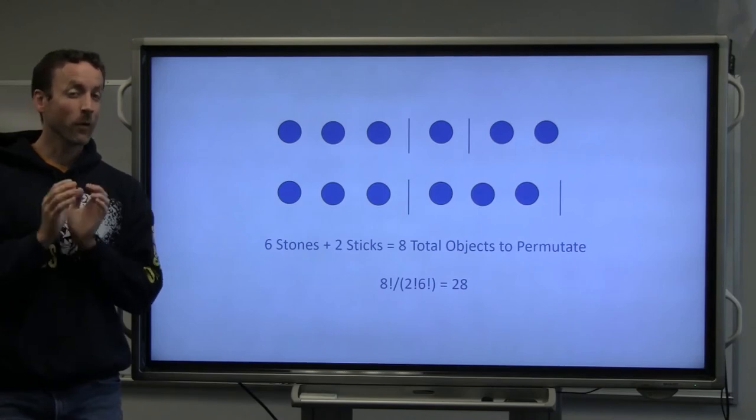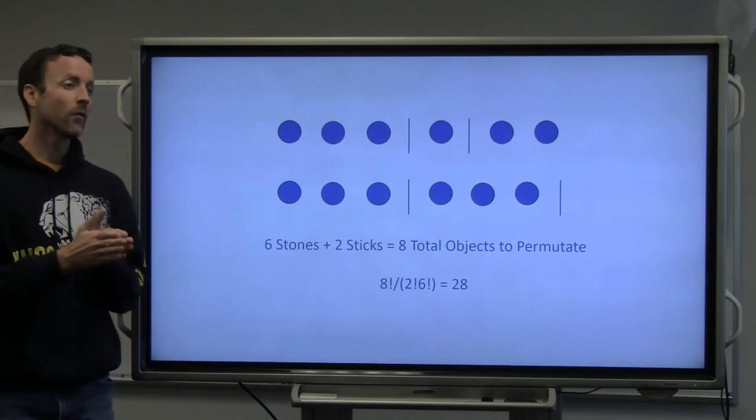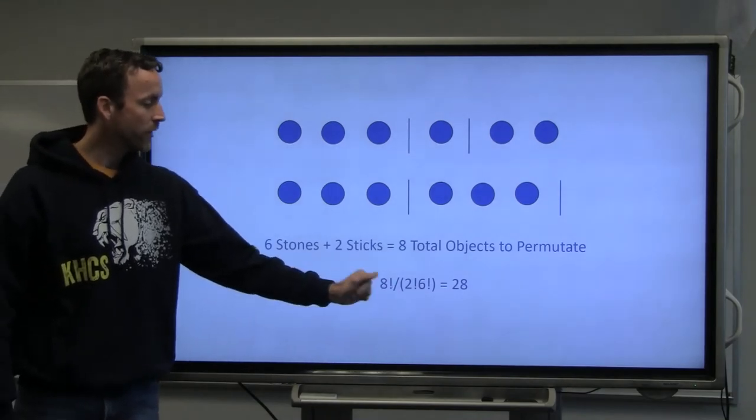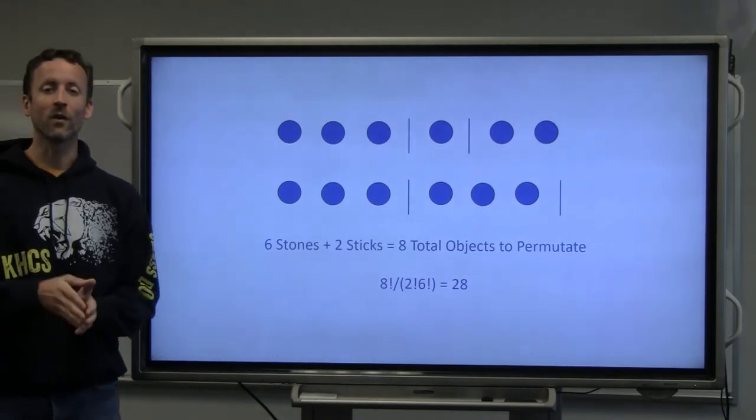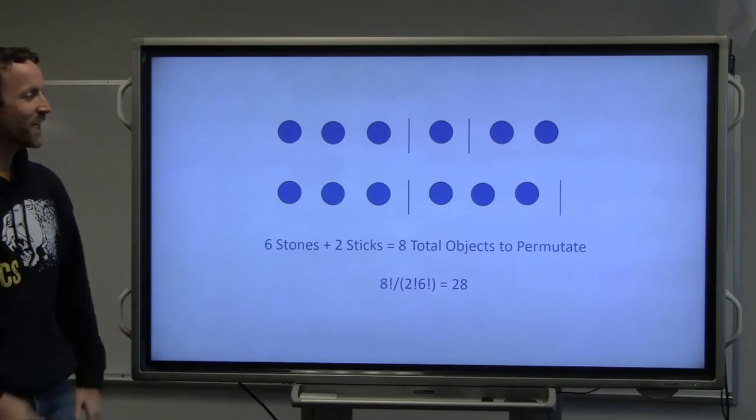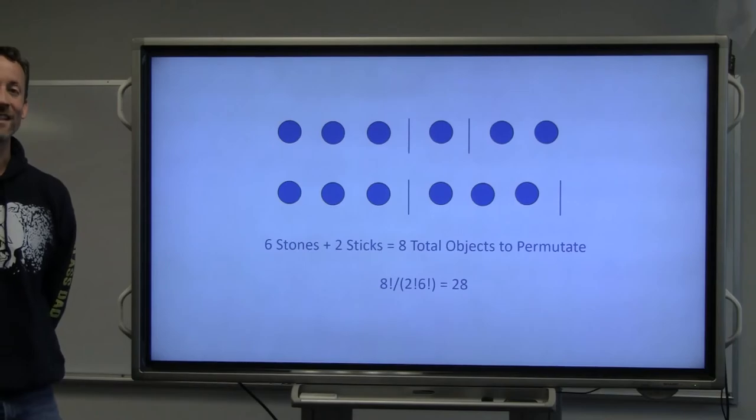Now remember when we permutated the A's and the B's? Well, we're going to do the same thing here. There are eight total ways, divided by two factorial, six factorial, because there are two sticks and six stones. And we get an answer of 28 different ways to arrange these objects.